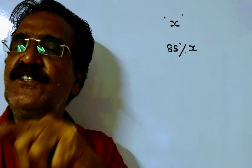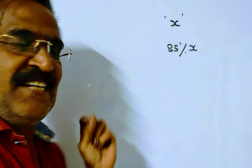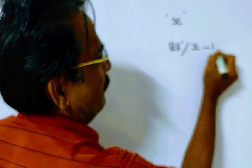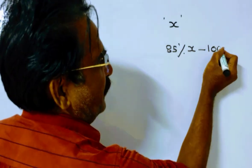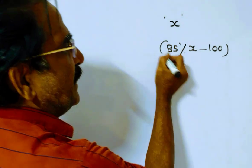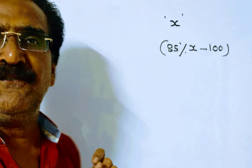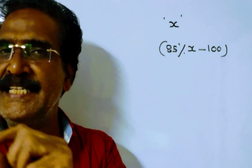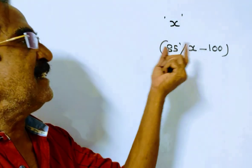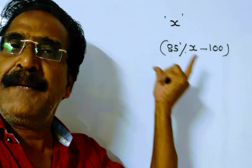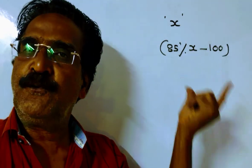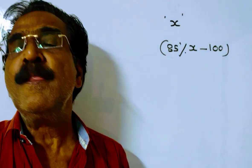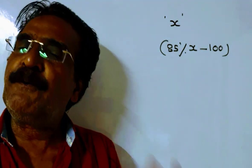Of which 100 votes were declared invalid. So the net number of valid votes is 85% of X minus 100. This net number of valid votes must be equal to the votes polled by the winning candidate plus votes polled by the losing candidate.